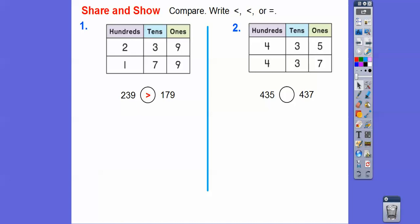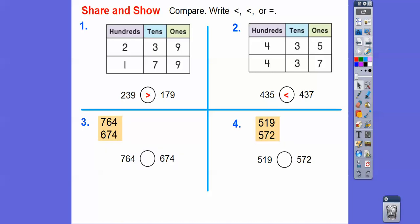Let's do the next one here. So this one, the fours are the same, so we go to the tens digits. The tens digits are also the same. So now we go to the ones digits, five is less than seven, so 435 is going to be less than 437. It's going to go that way right there.